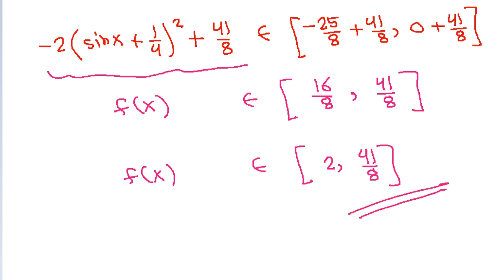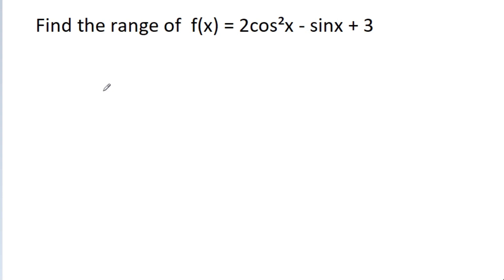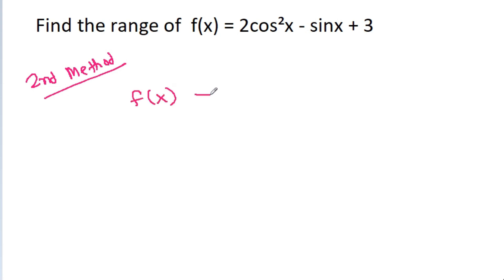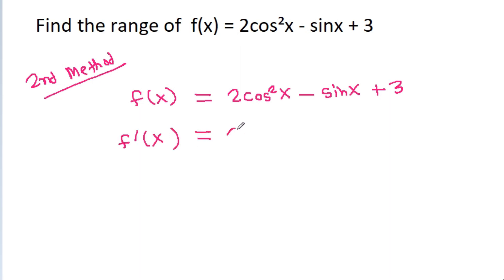The second method: we have f(x) = 2cos²x - sinx + 3. We compute f'(x) = 2·(2cosx·(-sinx)) - cosx = -4cosx·sinx - cosx.